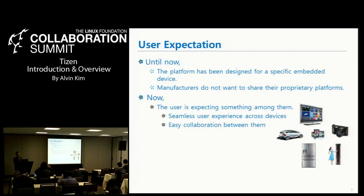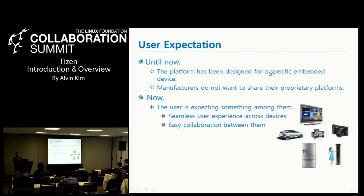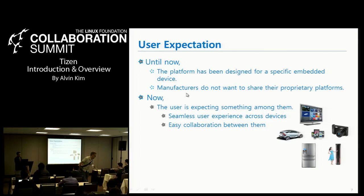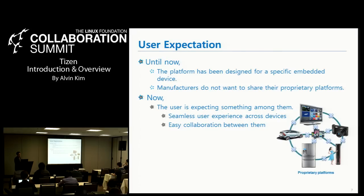What is the user expectation now? There are many smart devices around the world, but there is a kind of discontinuity between different devices from different categories, because each platform has been designed for specific embedded devices, and each manufacturer does not want to share their proprietary platform. But now users are expecting something more — for example, seamless user experience among devices or collaboration between them. The current status is that those smart devices are not working together well.